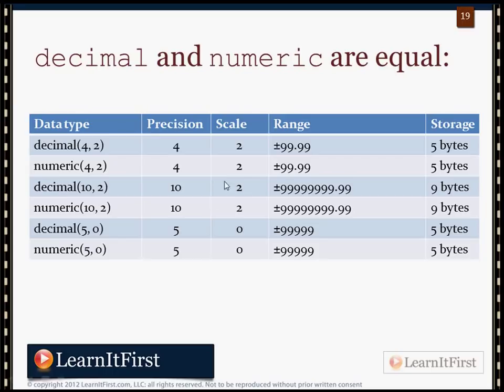You can also specify a zero scale. This is actually helpful. Sometimes you need to work with values where you need, say, a five-digit number — no decimal places, and you don't need to go beyond 9,999. You couldn't use smallint because it would allow values above 9,999. So you can use decimal(5,0) as a way of doing it, and it takes up five bytes.